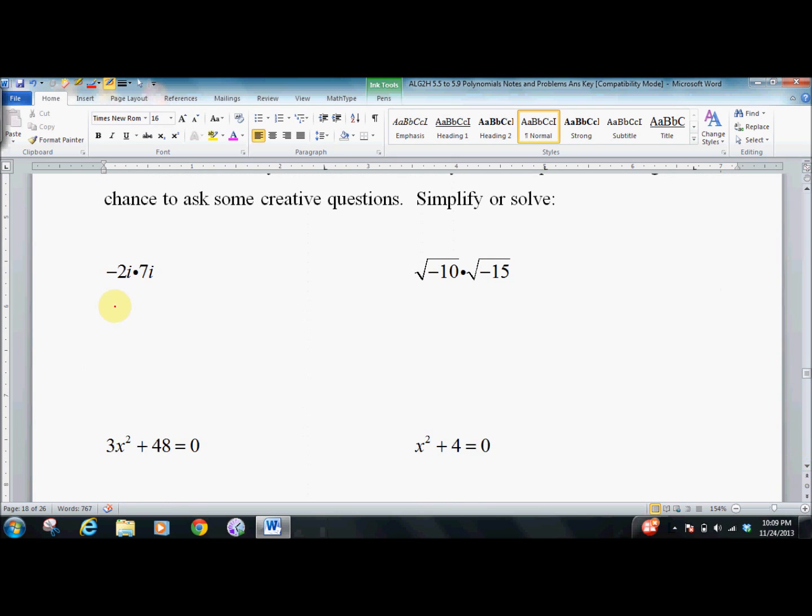So simplify this. You get negative 14 times i squared, which is negative 14 times negative 1, which is just 14. This one confuses people. They see the two negatives. I know I see them and they think, oh, they'll cancel out. But you have to rewrite it first.